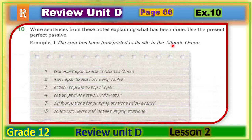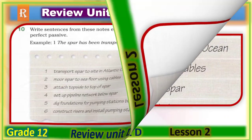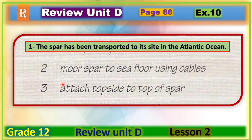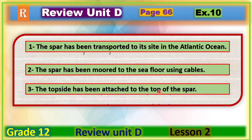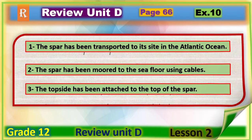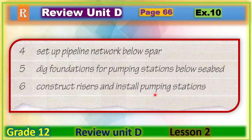Welcome back — let's check your answers. Sentence two: 'More spa to sea floor using cables' becomes 'The spa has been moved to the sea floor using cables.' Sentence three: 'Attach top side to top of spa' becomes 'The top side has been attached to the top of the spa.' Sentence four: 'Set up pipelines network below spa' becomes 'The pipeline network has been set up below the spa.'